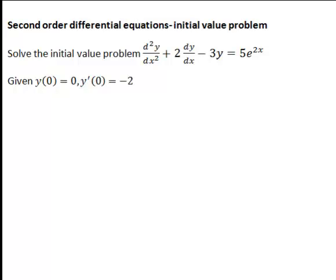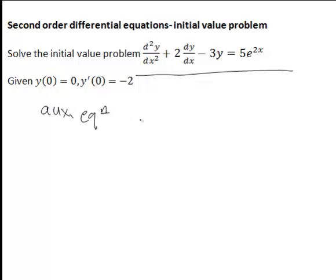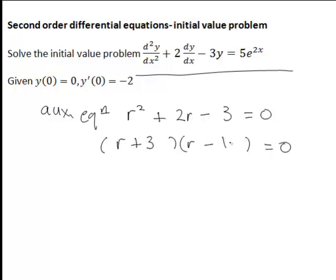The first step with any second-order linear DE of this form is to find the auxiliary equation. Because we have the second derivative of y plus 2 dy/dx minus 3y, the auxiliary equation is r squared plus 2r minus 3 equals 0. We solve that for r, and it readily factorises as (r + 3)(r − 1) equals 0, giving r equals negative 3 or 1.